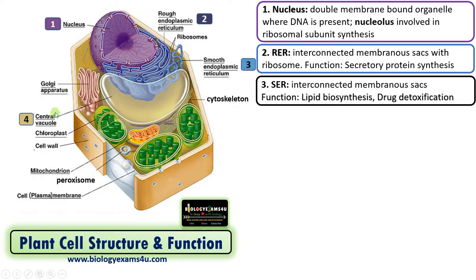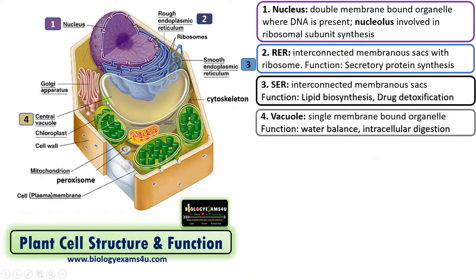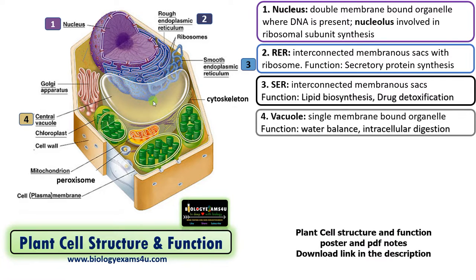The next organelle is the central vacuole. In plant cells, the vacuole is often the largest organelle, accounting for nearly 70 to 80 percent of the total space — much larger than the nucleus. Vacuole is a single membrane-bound organelle; the membrane is called the tonoplast, and its function is water balance. It is also involved in intracellular digestion. In plant cells, lysosomes are absent, so the role of lysosomes — intracellular digestion — is carried out by the vacuole. It is also involved in storing toxic chemicals, pigments, etc.